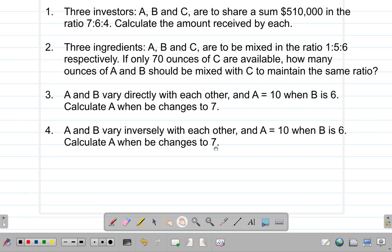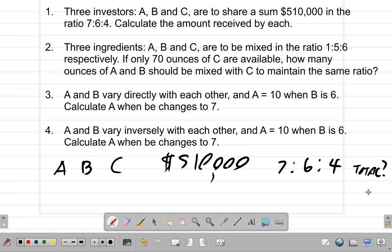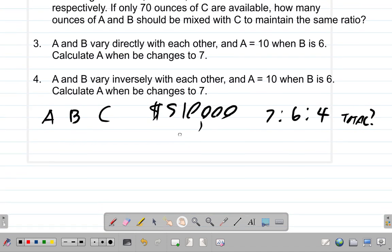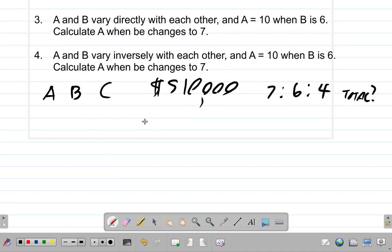So here we have three investors, A, B, and C. The sum of money is $510,000, and the ratio is 7 to 6 to 4. Now, you have a certain number of parts that this money is divided into. So the number of parts will be 7 plus 6 plus 4. The total parts, 7 and 6, 6 and 4 is 10 and 7, 17. 17 parts total. Total of 17 parts.